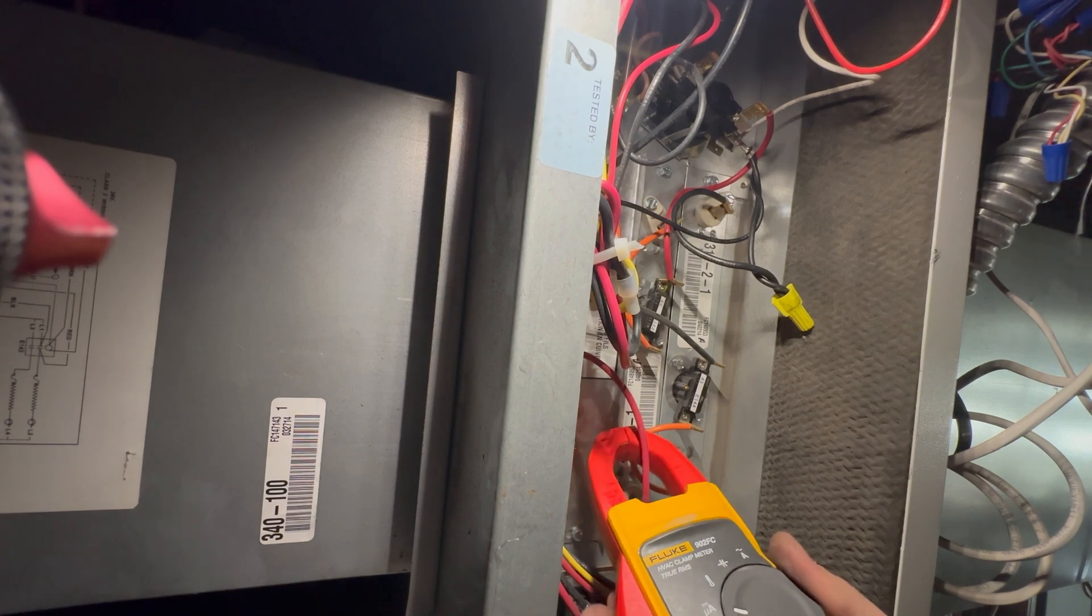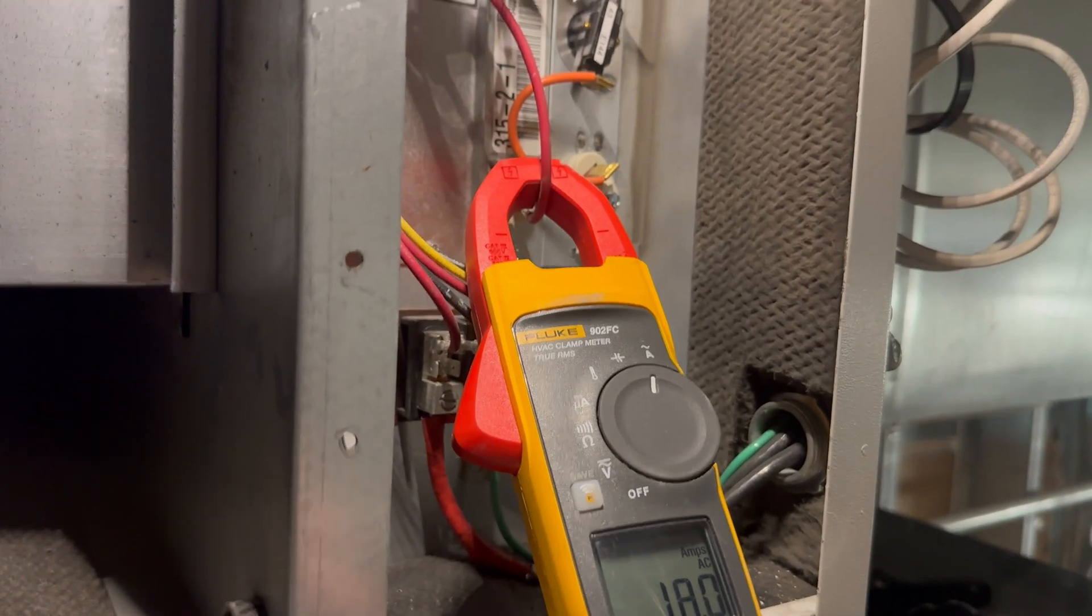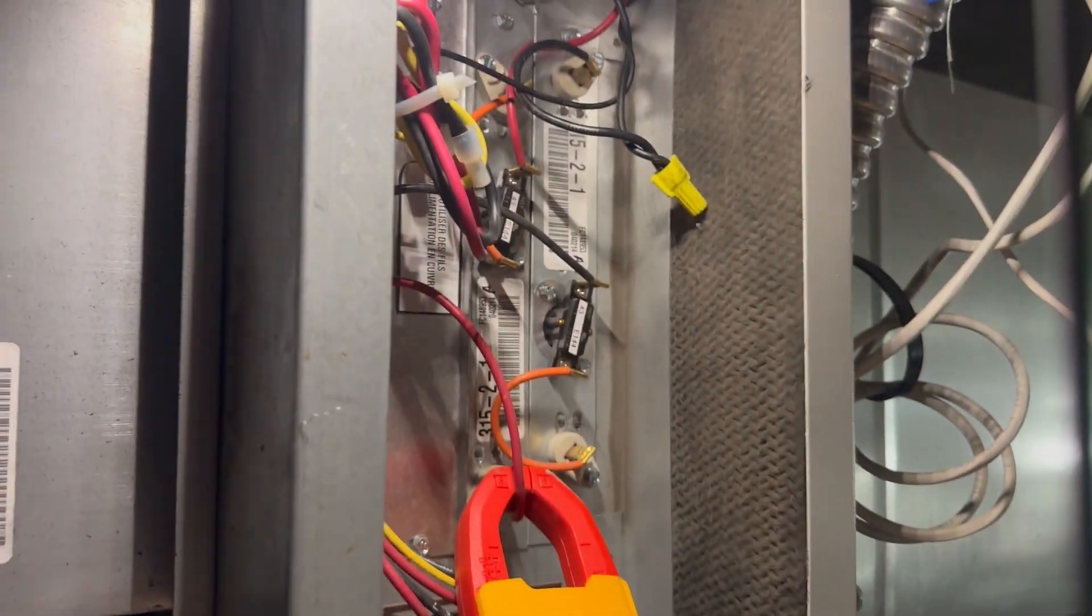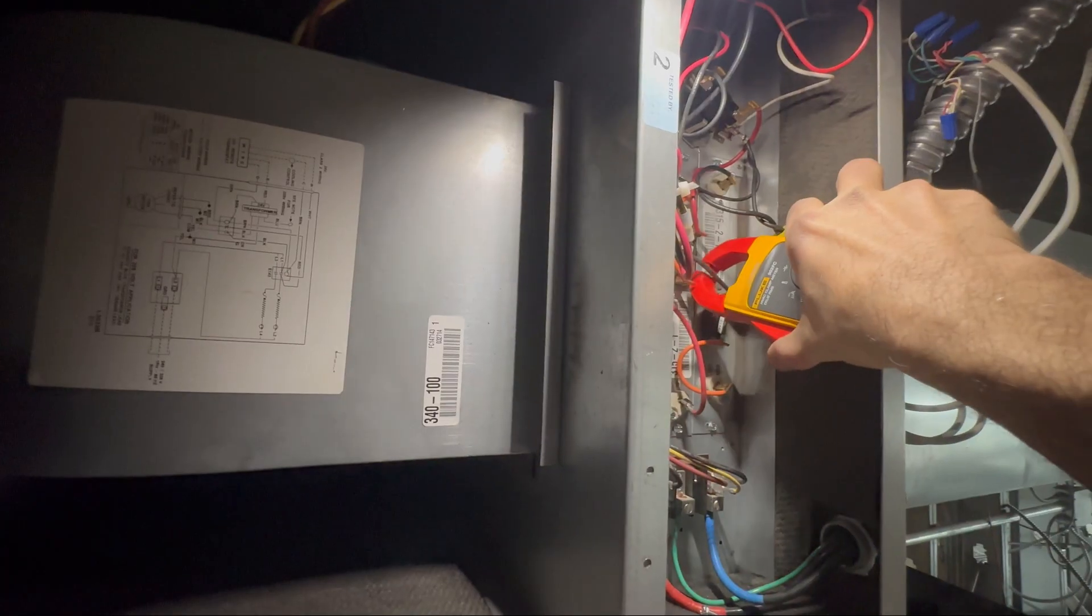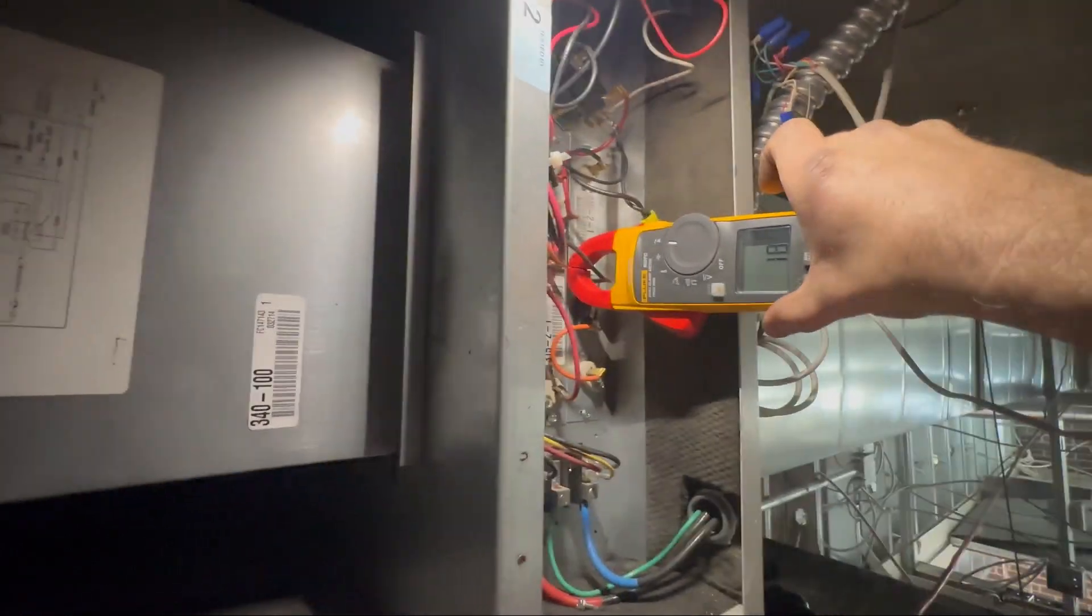Putting my amp clamp on one of the heating stages. Reapply power. And as you can see right here, we're pulling 18 amps on heater circuit one. And also got 18 amps on heater circuit two. So both heating circuits are working.